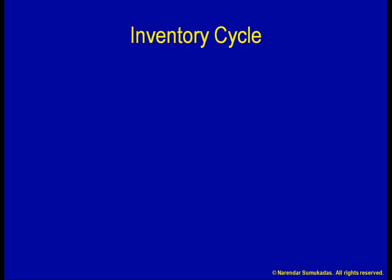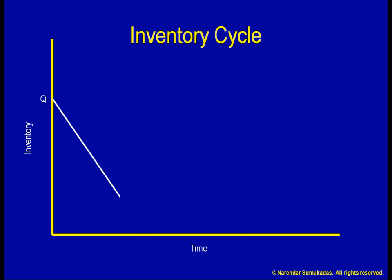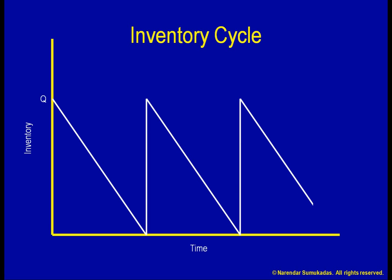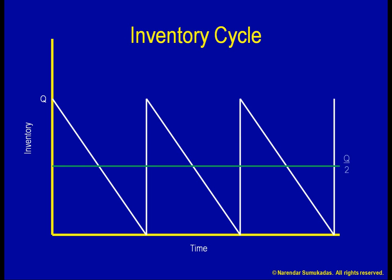In the typical inventory cycle, with its sawtooth pattern, if our purchasing pattern calls for an order quantity Q, our average cycle inventory will be Q divided by 2. The larger the quantity Q, the longer our inventory cycle will be, and the less frequent our orders will be.